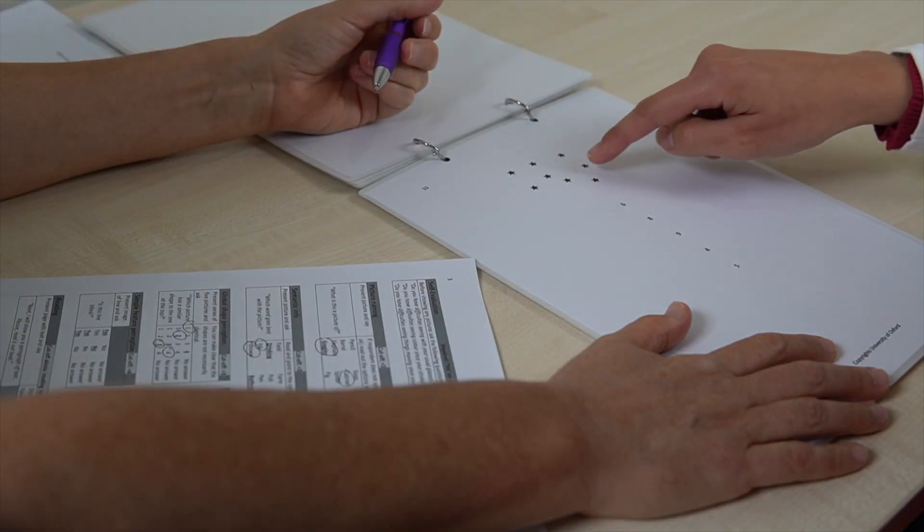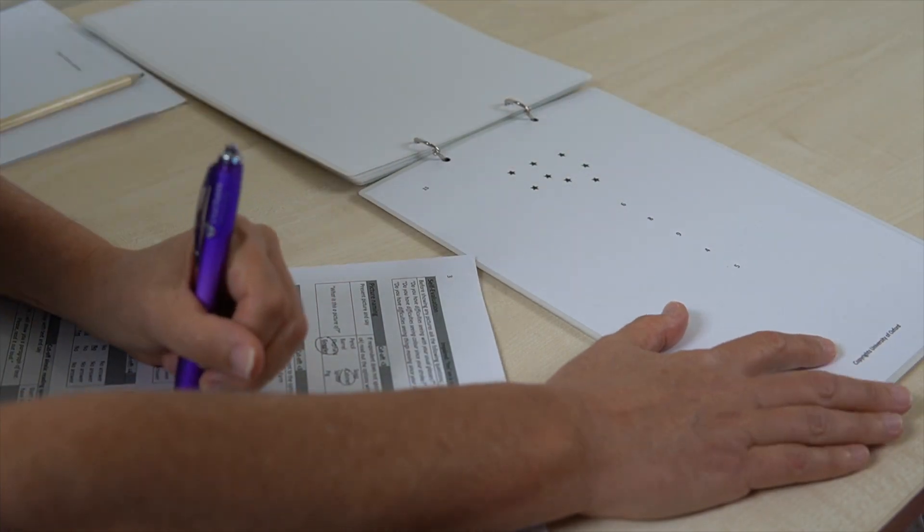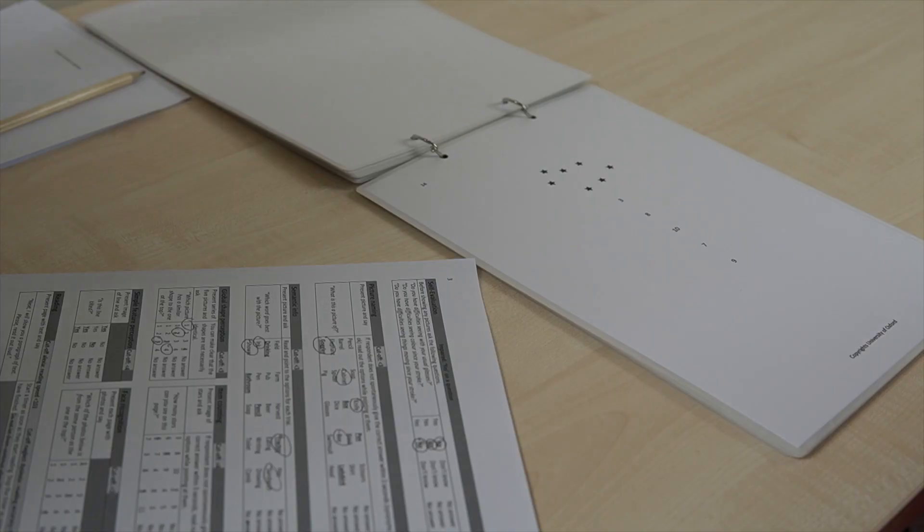In the fifth task, item counting, patients see a page with stars on it and they have to count how many stars are on the page. They've again given five options to choose from. Sometimes they'll say a number that's not on the page. In that case, I will just read out the options and ask them to pick one of those.